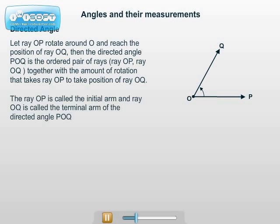The ray OP, the first ray in the ordered pair, is called the initial arm. The ray OQ, the second ray in the ordered pair, is called the terminal arm of the directed angle POQ.